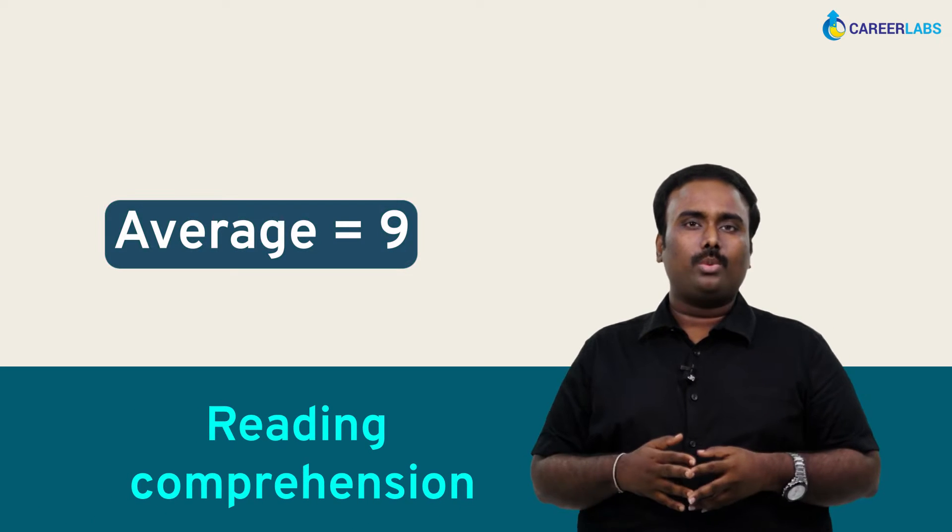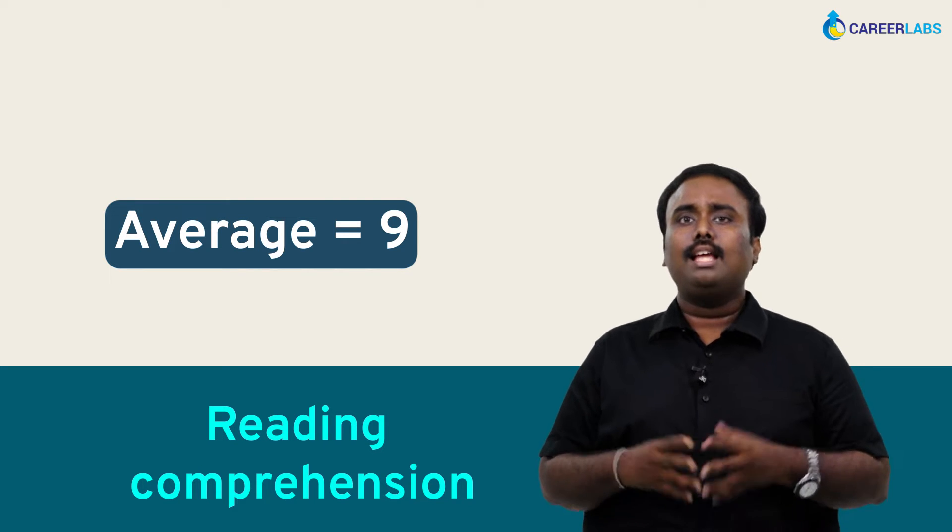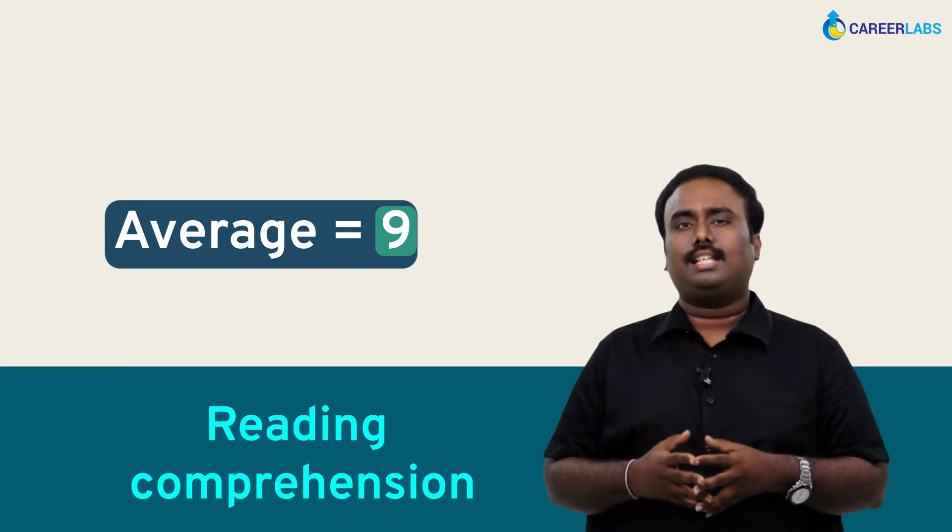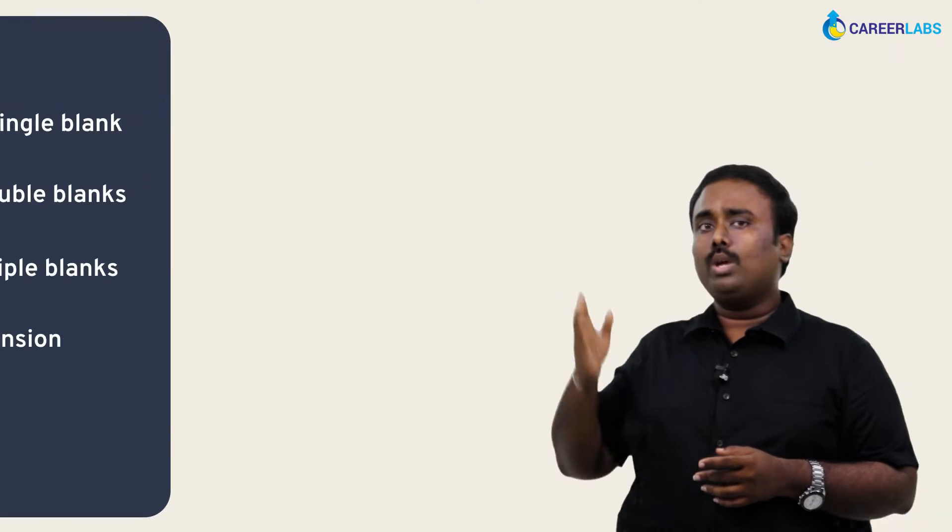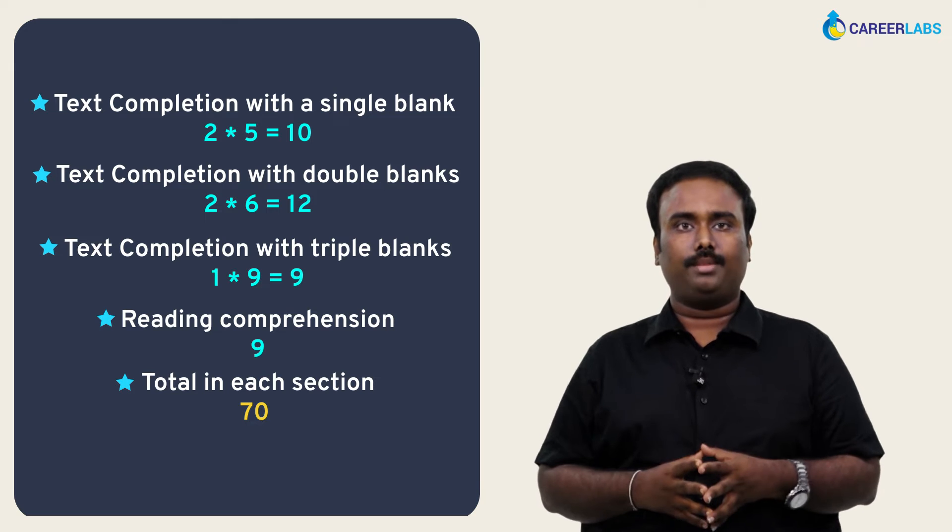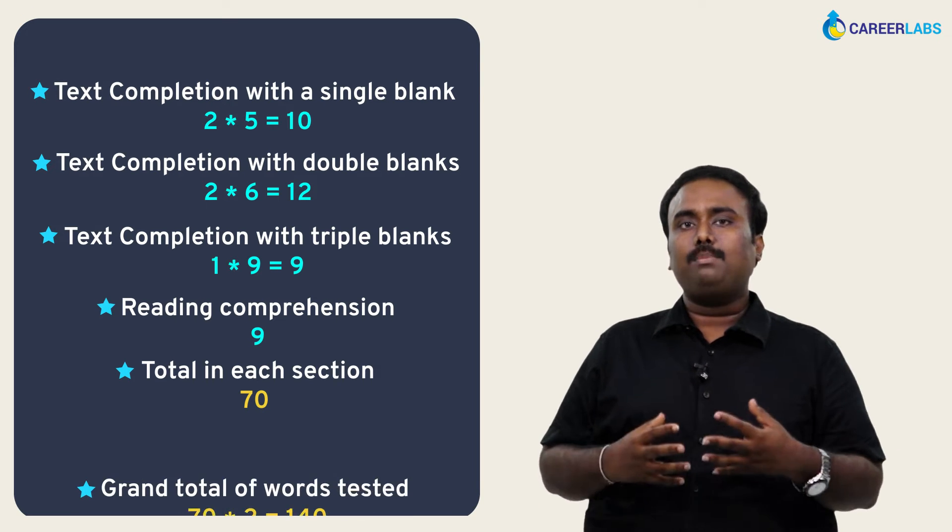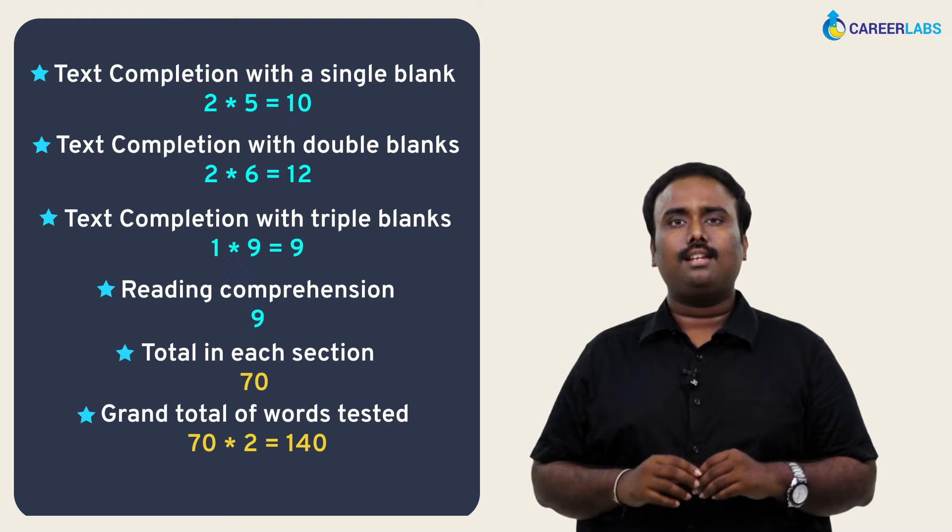Now the reading comprehension question doesn't explicitly test our vocabulary. So for ease of math, let's say on average, around 9 words are tested on that section. When we add all these numbers, we get a total of 70 words per section tested on the GRE. As there are 2 scored verbal sections on the GRE, that makes the grand total of words tested 140.